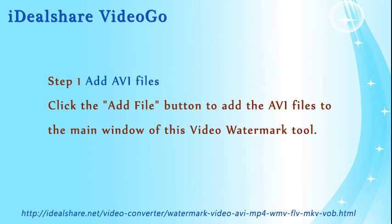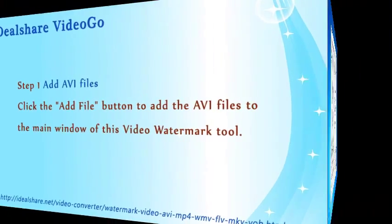Step 1: Add AVI files. Click the Add File button to add the AVI files to the main window of this video watermark tool.